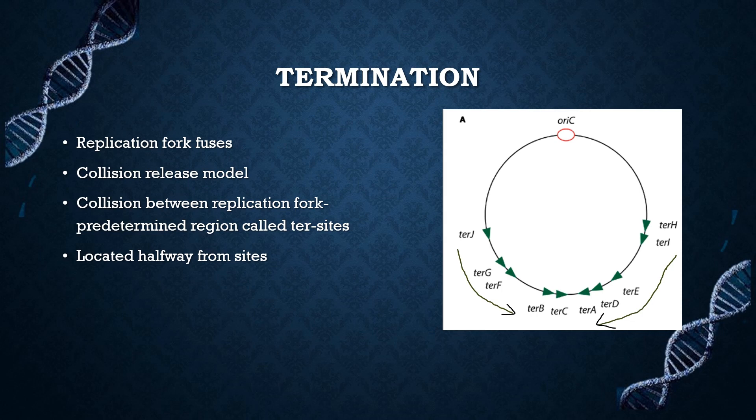Replication termination of prokaryotic and some eukaryotic chromosomes occurs at specific sequences called replication termini. It occurs when replication forks fuse, explained by the collision release model. The collision between replication forks occurs in a predetermined region called ter sites. Ter sites are located halfway from the origin, as you can see in the image.